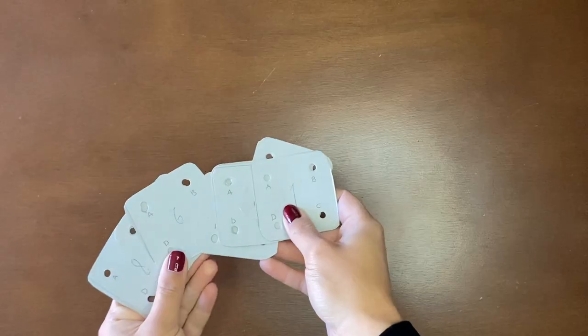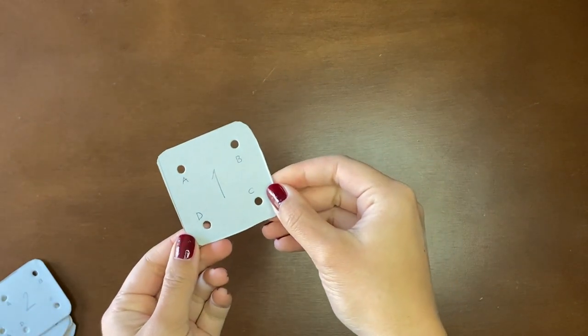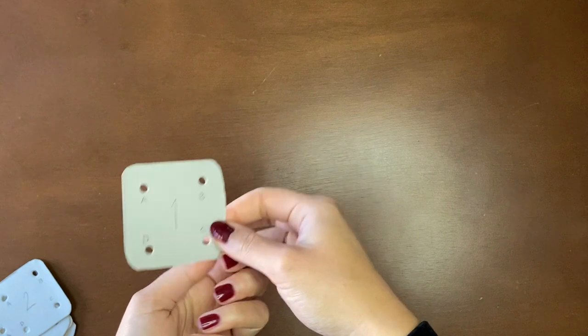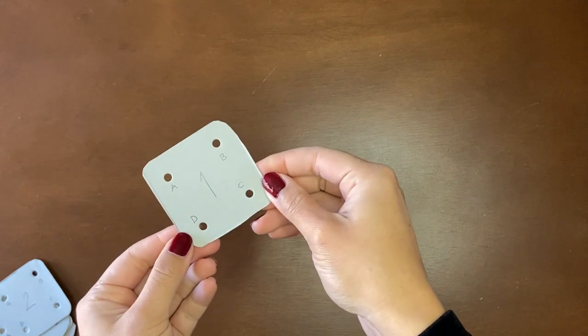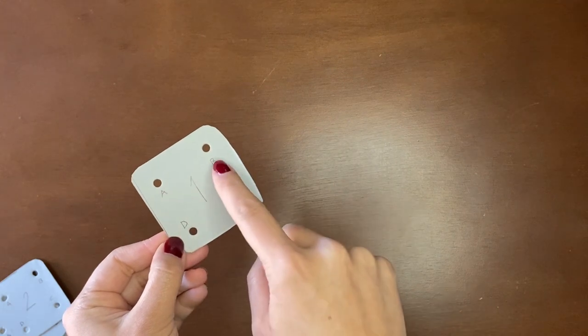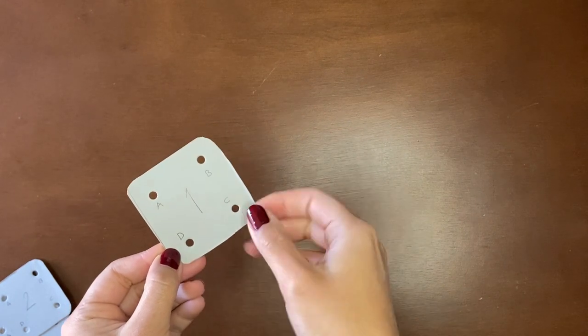You can buy wooden tablets online or you can just make your own cards from cardboard. In this video I'm using eight cards but the number of cards is ultimately determined by the pattern itself. Assign each card a number and mark the corners of the cards from A to D in the same order as shown here.